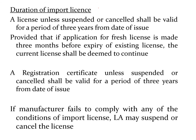The duration of an import license: application is made in Form 8 or 8A and the license is obtained in Form 10 or 10A. A license, unless suspended or cancelled, shall be valid for a period of 3 years from the date of issue. Provided that if application for a fresh license is made 3 months before the expiry of the existing license, then the current license shall be deemed to continue.